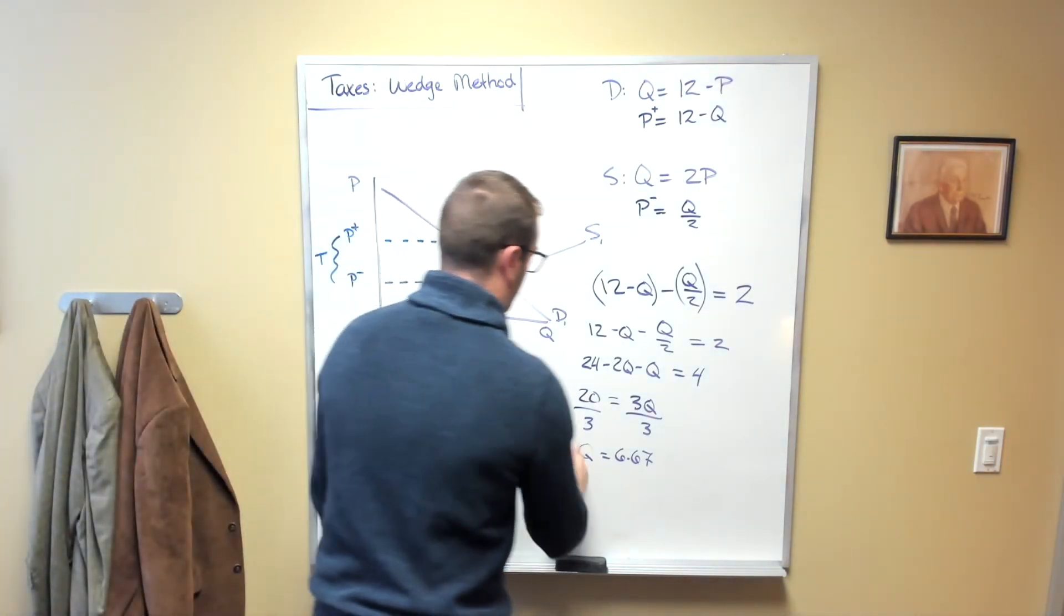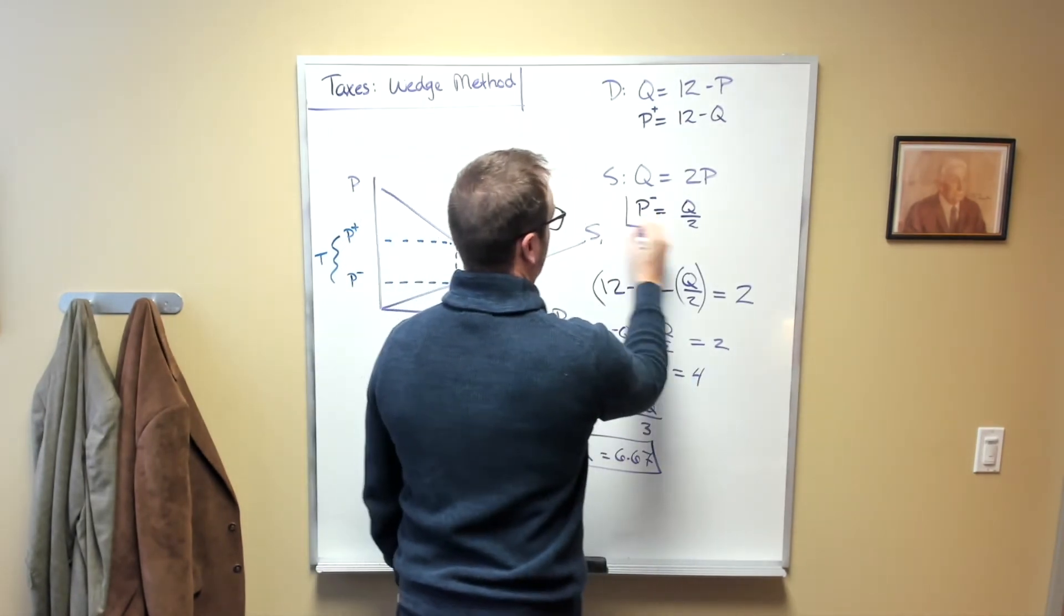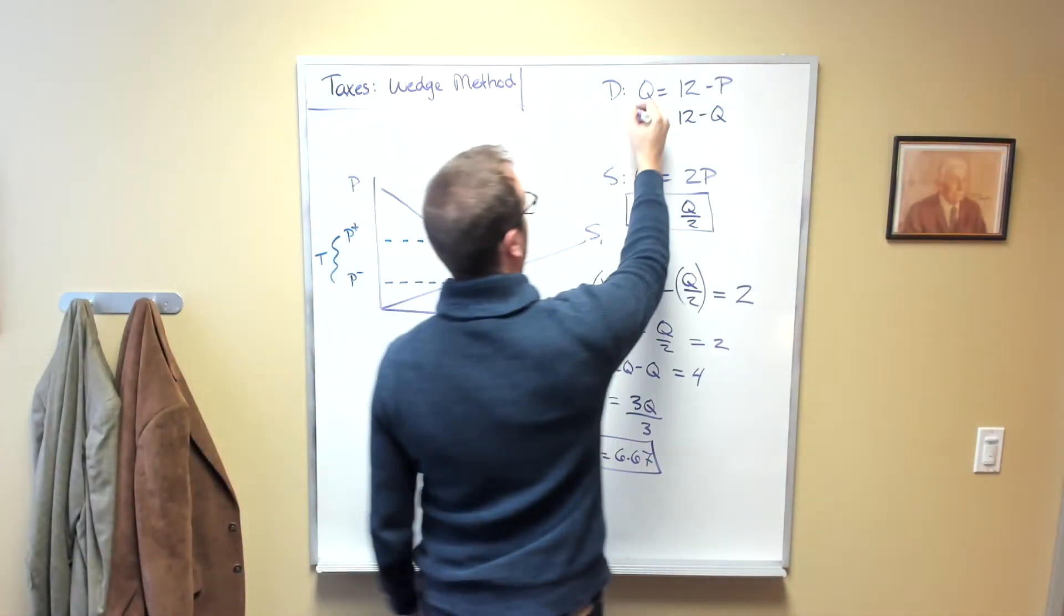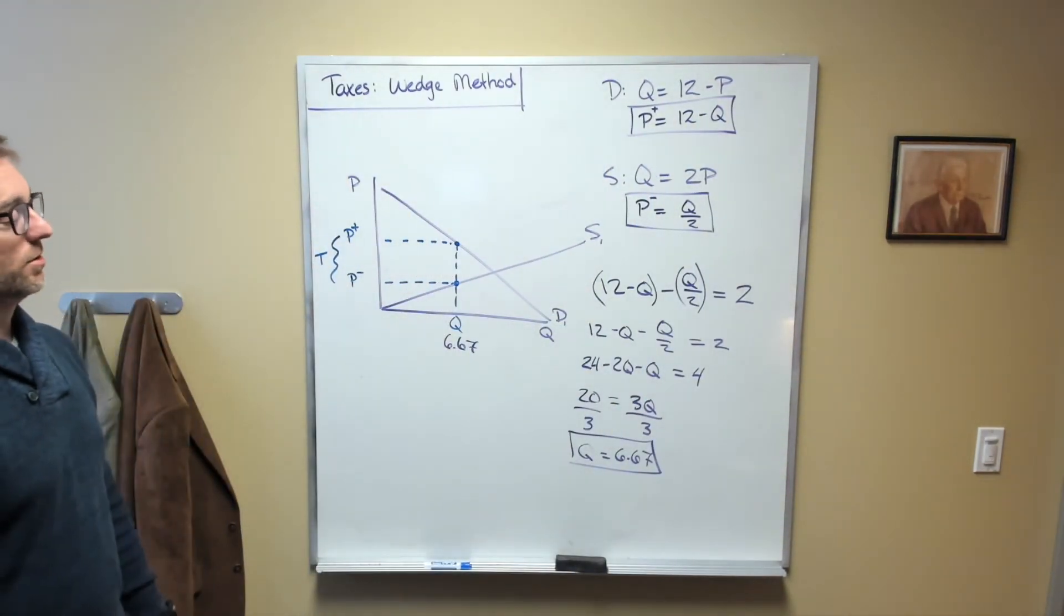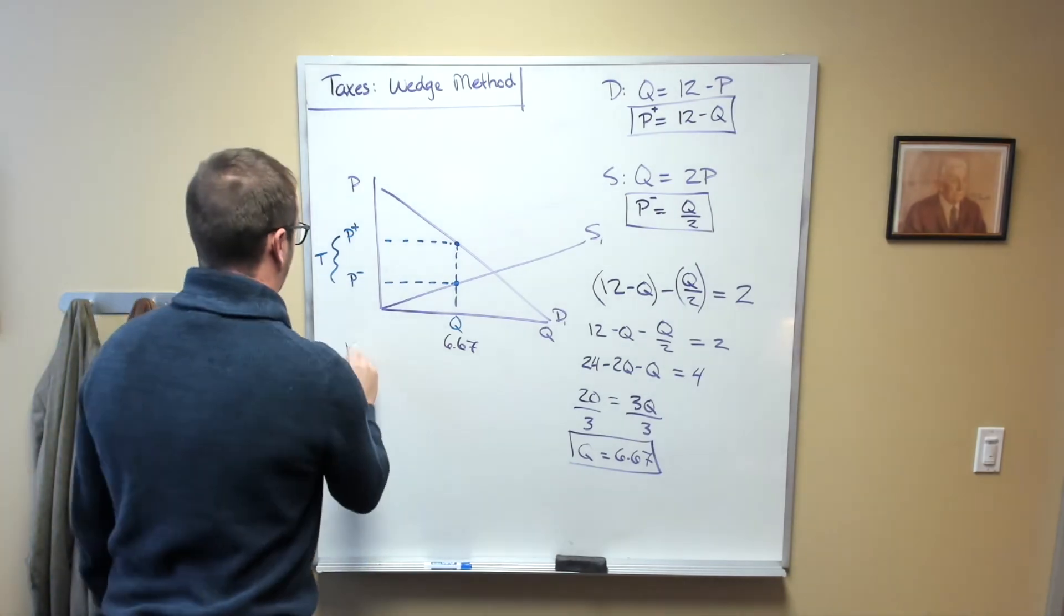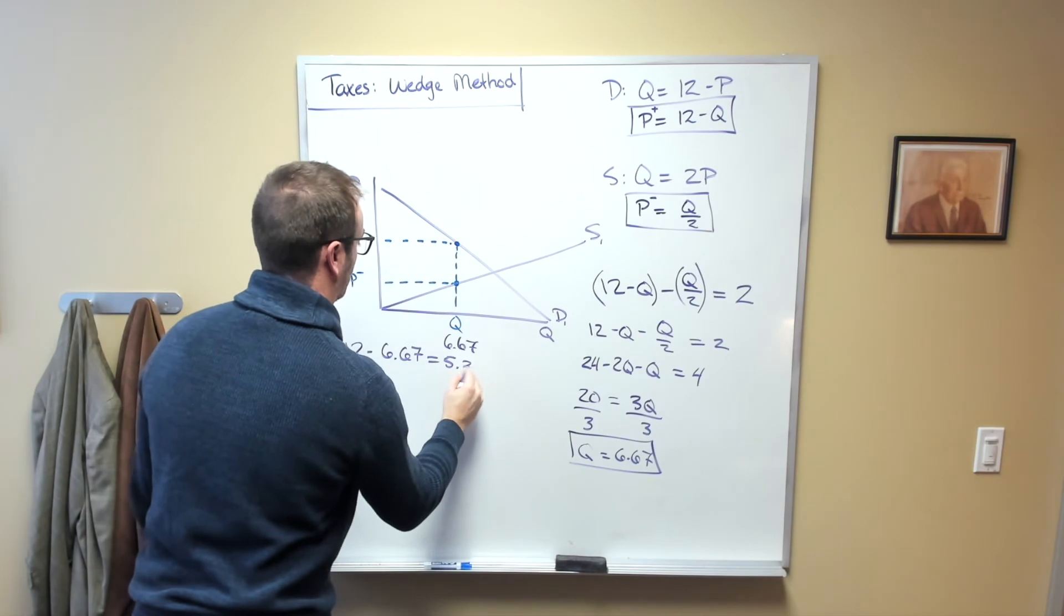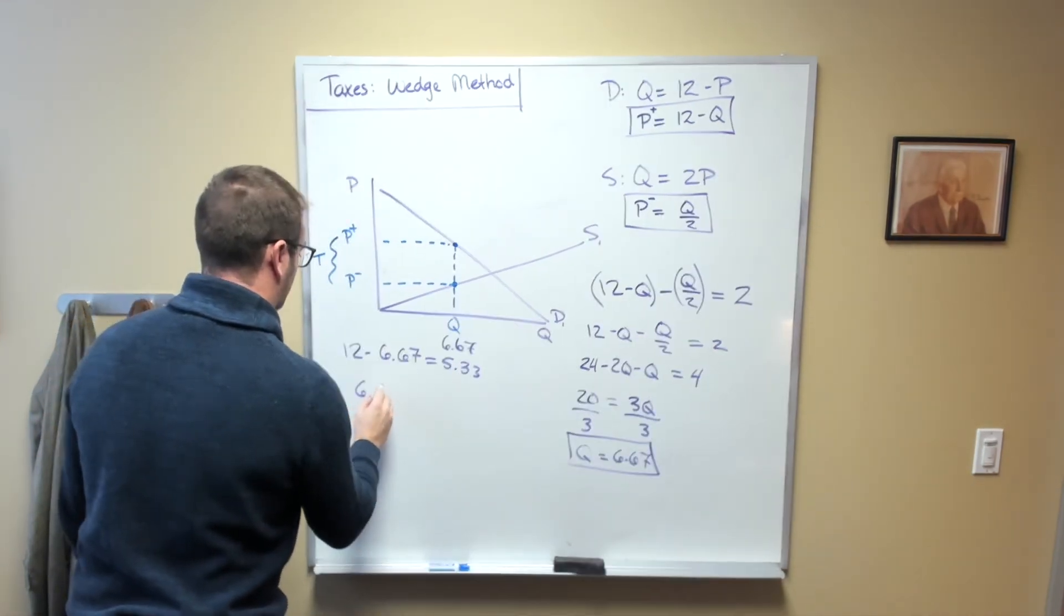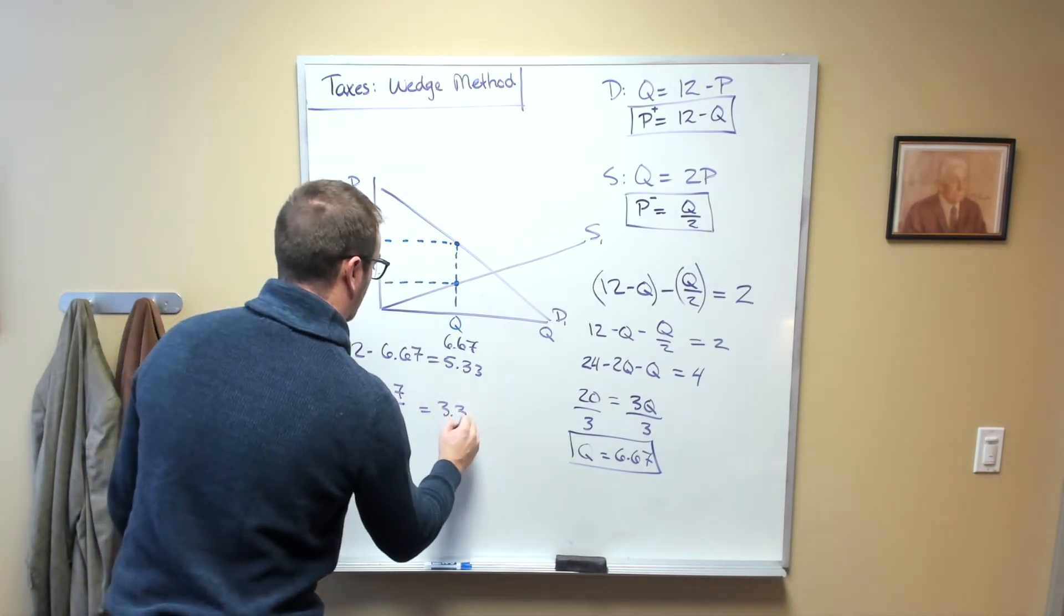And from here I can take this 6.67 and I can plug it in to here to get the price that the producers are going to keep, and I can plug it into here to get the price that the consumers are going to pay. So 12 minus 6.67 is equal to 5.33, and 6.67 divided by 2 is equal to 3.33.